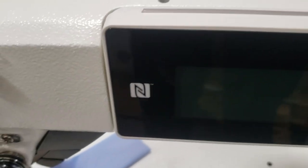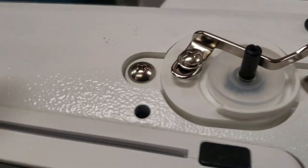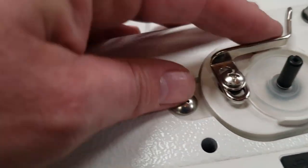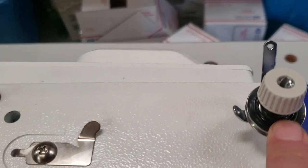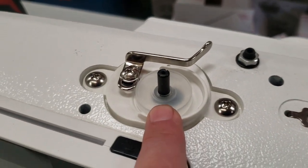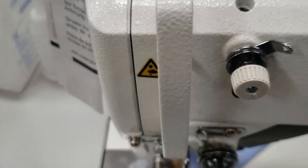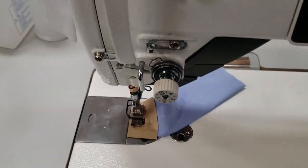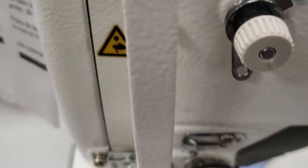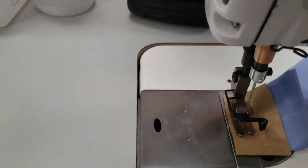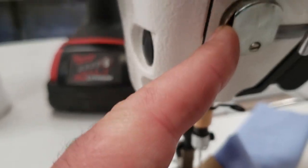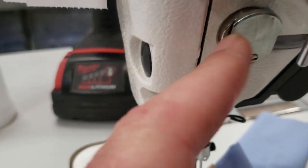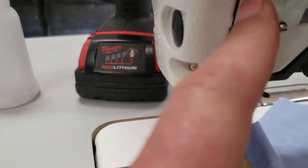This is an automatic bobbin winder on the machine. This is the cutter right here. This is a tension unit for the bobbin winder and these two are for the thread. This is a full tension, this is the regular tension, and even the thread guide right here is automated. It's magnetic.